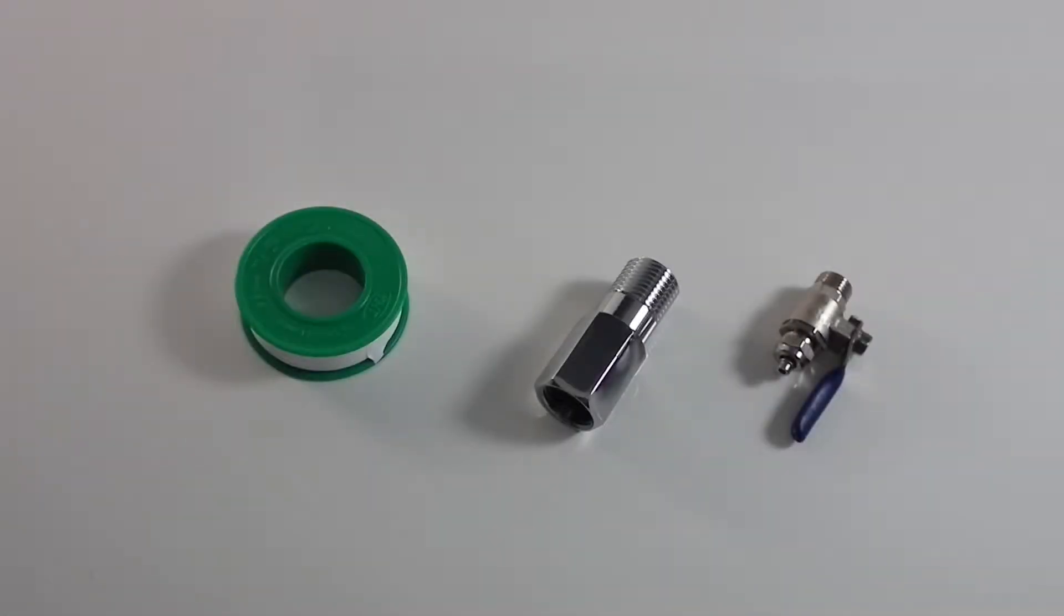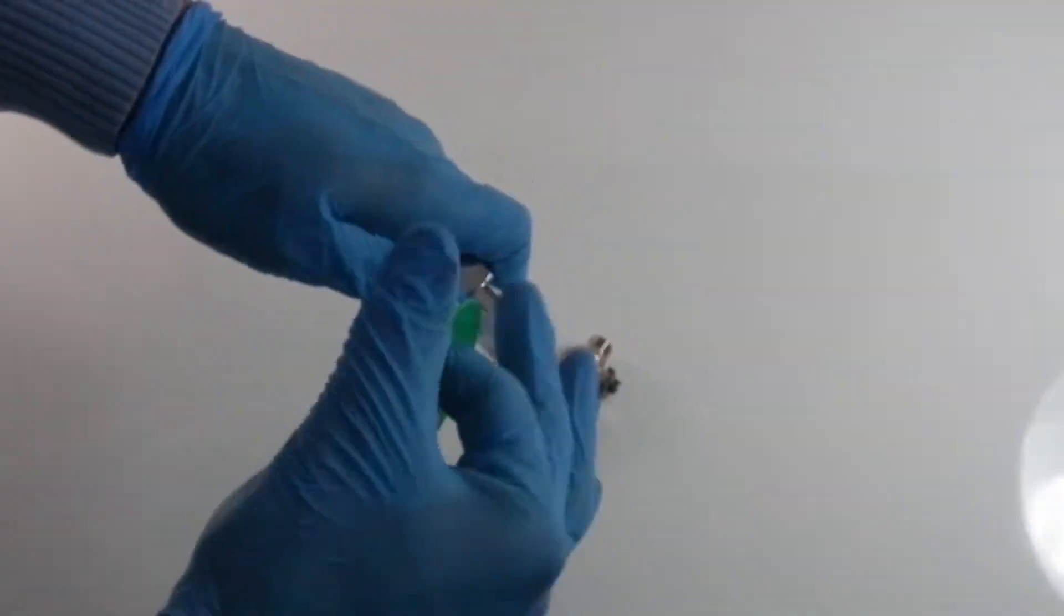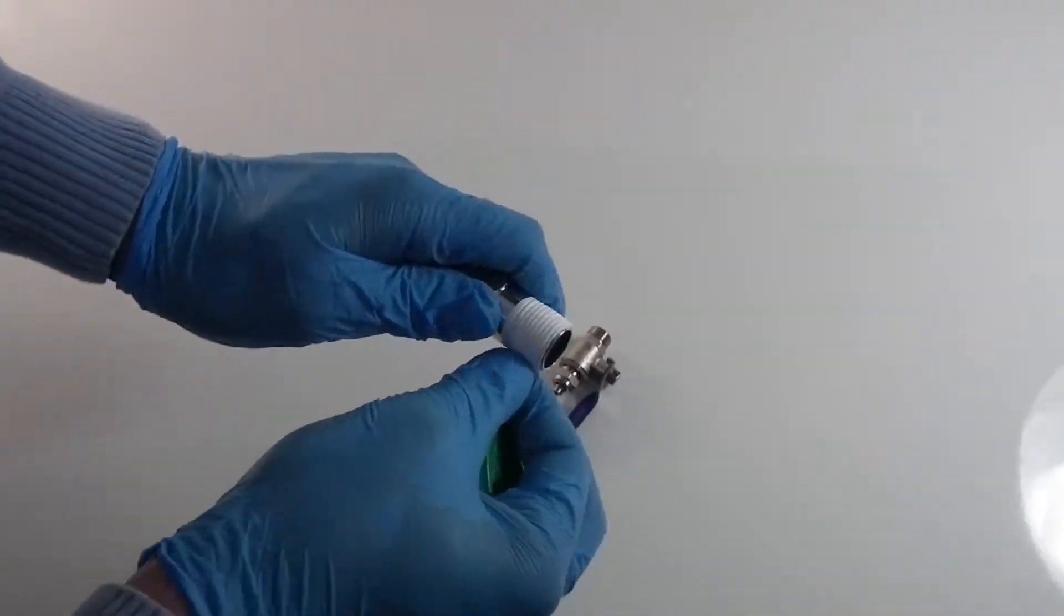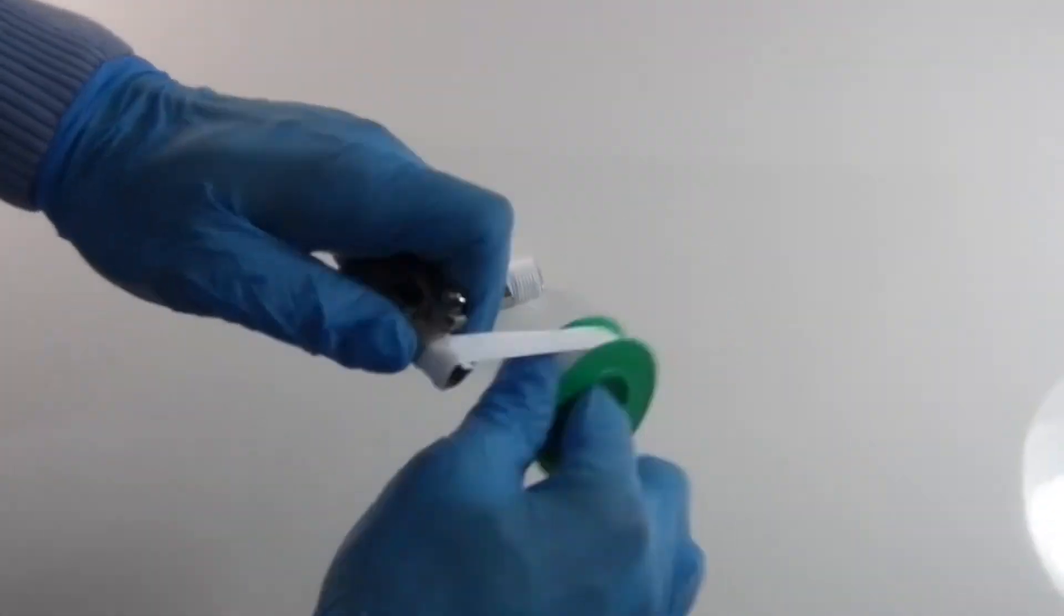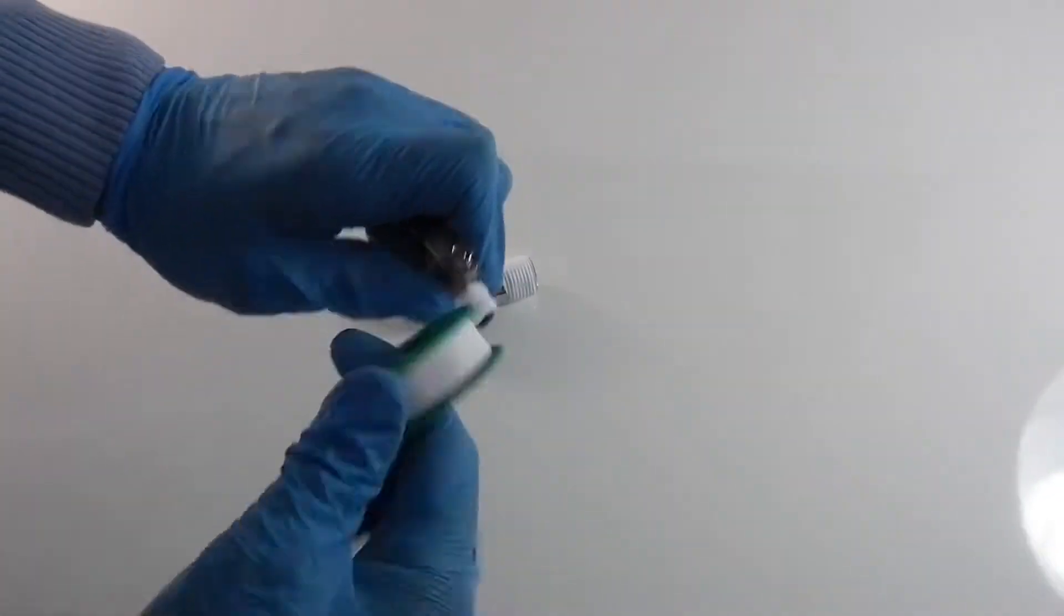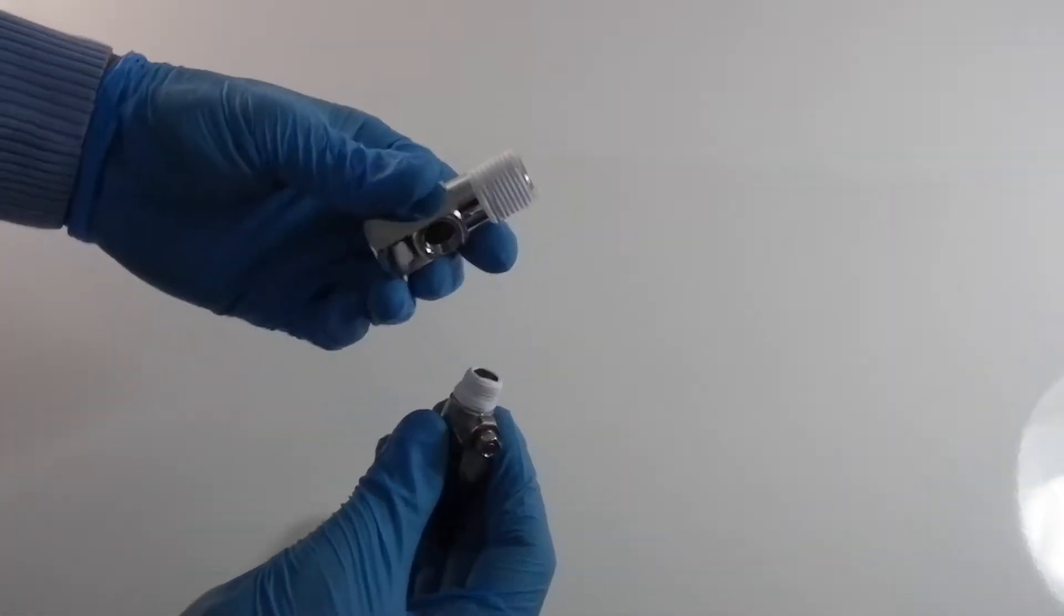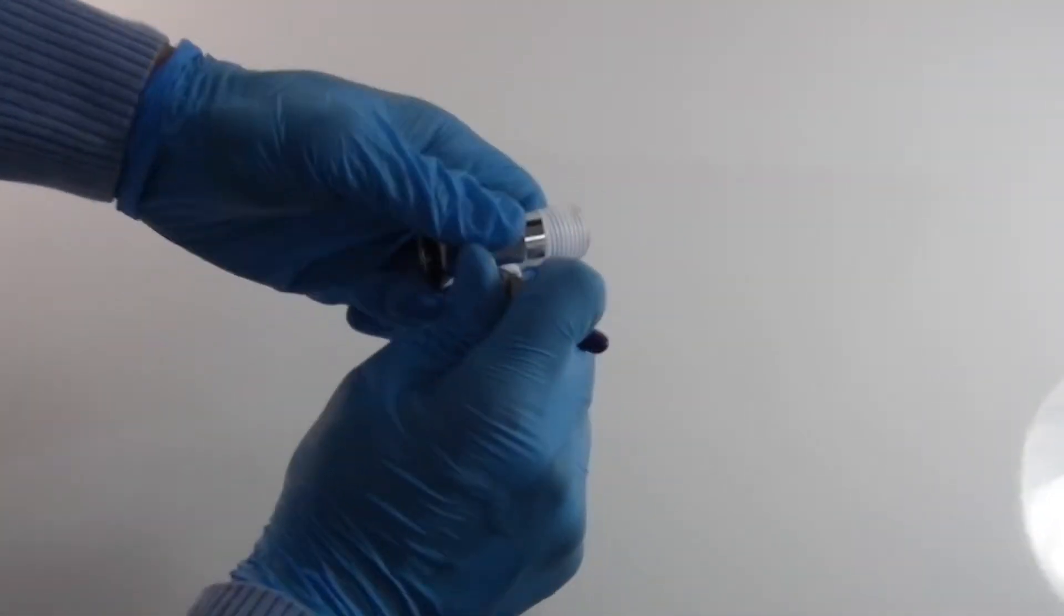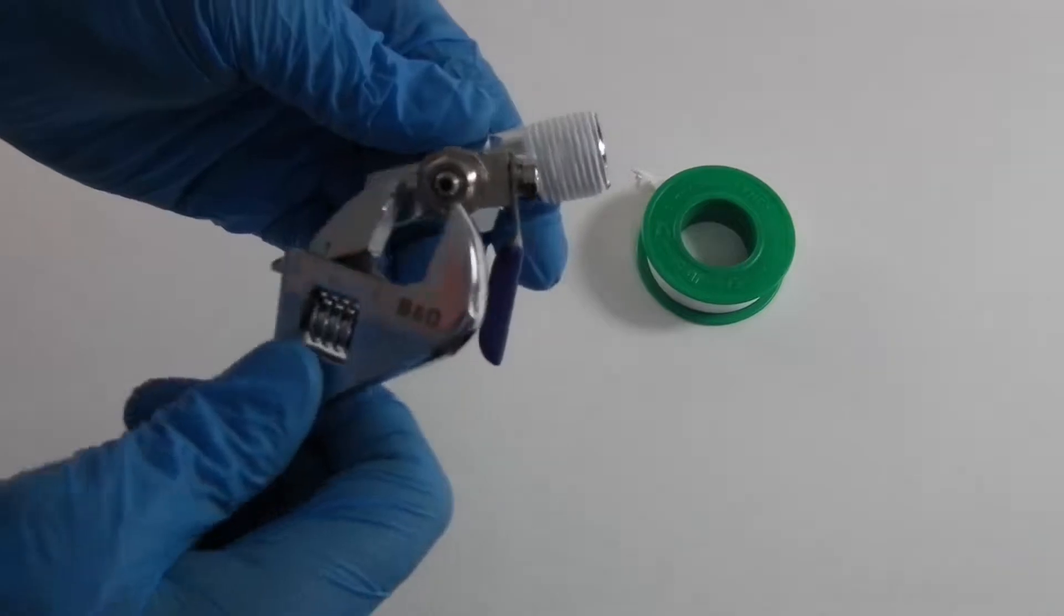For the next step, let's assemble the feed water system. Be sure you have the diverter valve, the metal ball valve, and PTFE tape. Apply PTFE tape around the diverter valve male thread connection side and the same for the metal ball valve. Then screw the ball valve into the diverter valve and make a full tightening with a spanner.